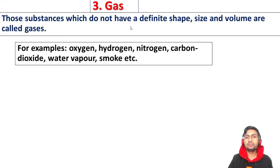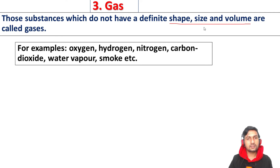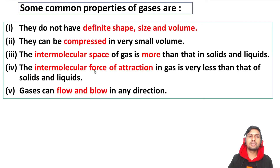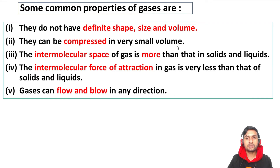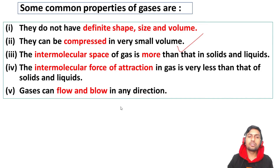Gases do not have a definite shape, size, or volume. Examples of gases include oxygen, hydrogen, nitrogen, carbon dioxide, water vapor, and smoke. Gases can be compressed into a very small volume — for example, air is compressed into footballs, car tires, and tubes. There is a large intermolecular space between gas molecules, and gases flow freely.